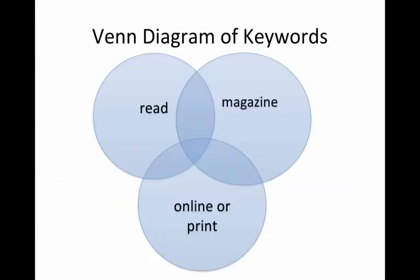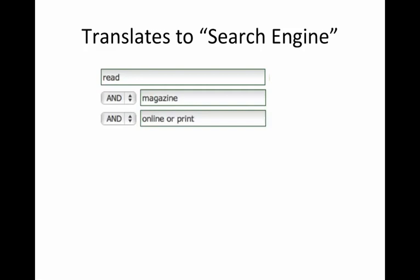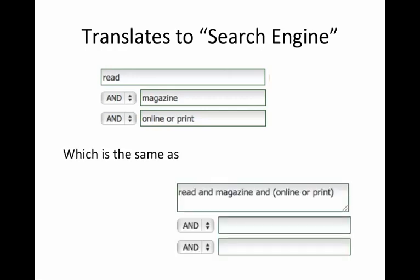I'll show you what I mean with a Venn diagram — remember those from fifth grade? We have read, we have magazine, those are ANDed together. In the bottom circle, we're ORing online or print together. To translate this to search engine language, it looks like this in the search box in Communication and Mass Media Complete — the same as writing it all out in one line with parentheses around the things you're ORing together. You can do it either way; the results are exactly the same.